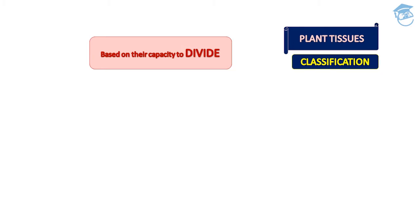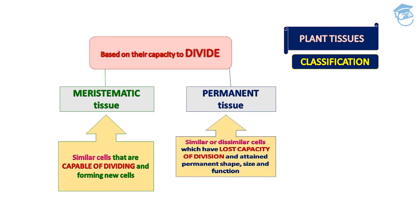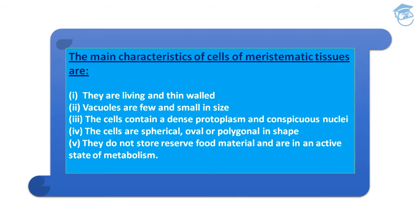Plant tissue classification: on the basis of their capacity to divide, tissues are divided into two types — meristematic and permanent tissue. Meristematic tissue consists of similar cells capable of dividing to form new cells or help in the repair process. Permanent tissue consists of similar or dissimilar cells that have lost the capacity of division and have attained a permanent shape, size, and function.